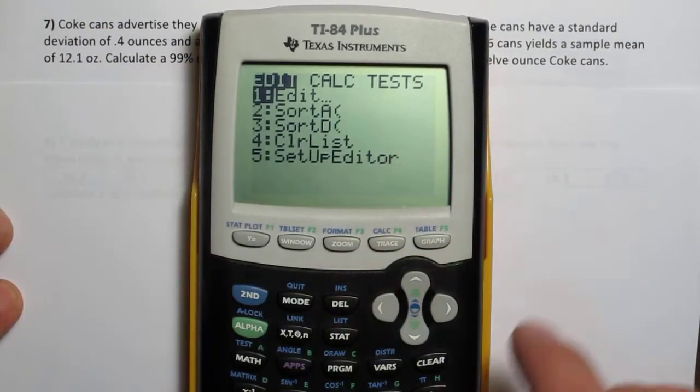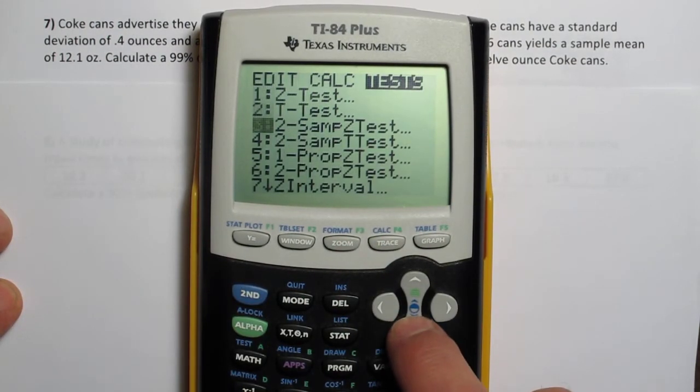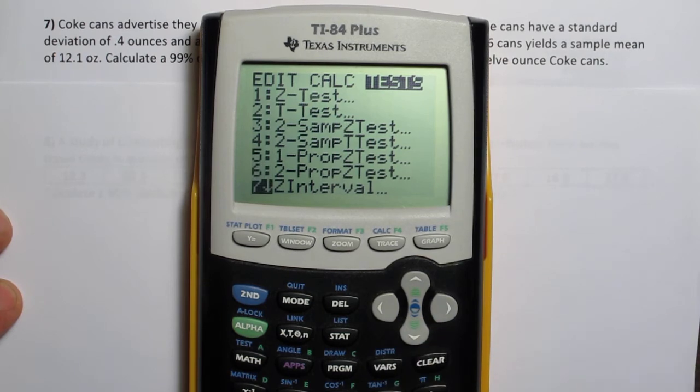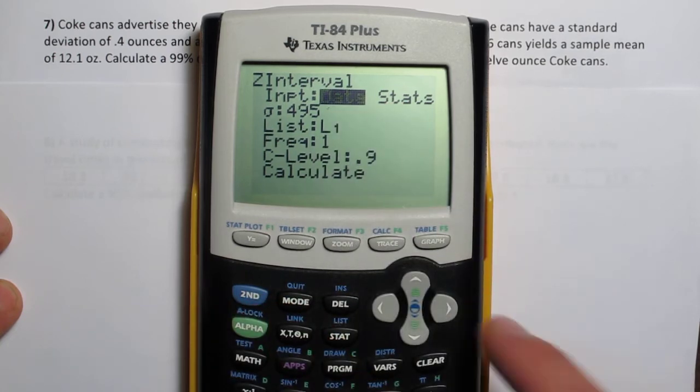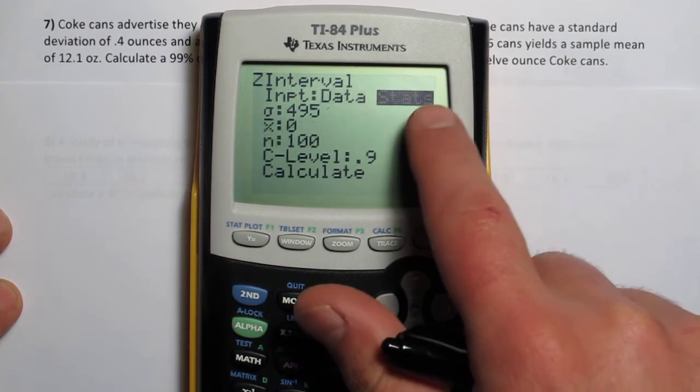So if you press the STAT button, scroll over to tests, and go down to option 7, z-interval. You have two options here, you can either input data, we're not going to use that right now, we're going to use the stats option.